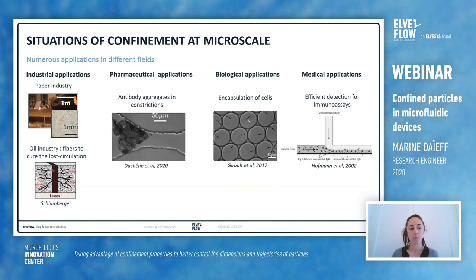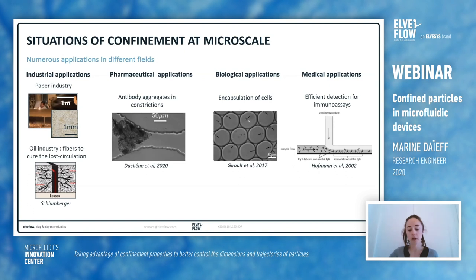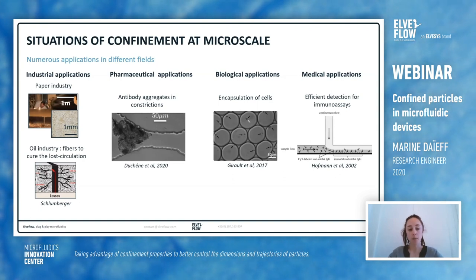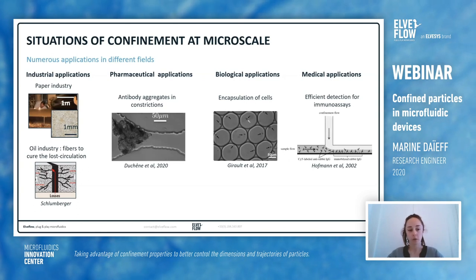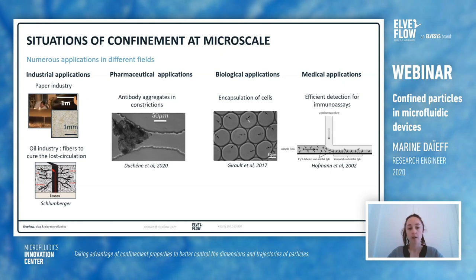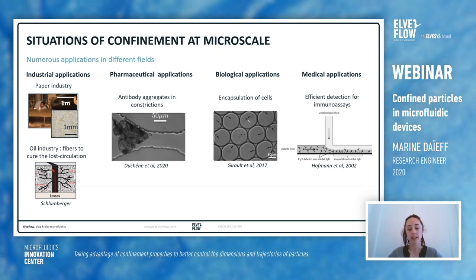Most of you can give some examples of confinement at micro scale. For example, you can find confined situations in industrial applications such as the paper industry — paper is made of fibers confined in a sheet. In the oil industry, you have fibers to cure lost circulations. In pharmaceutics, you need to avoid any confined particles in your systems.